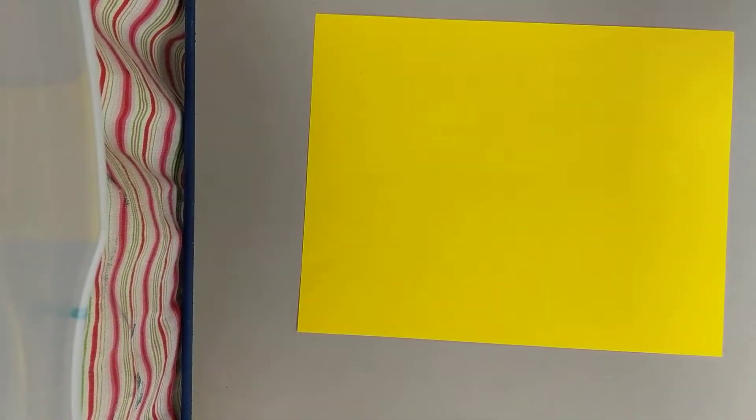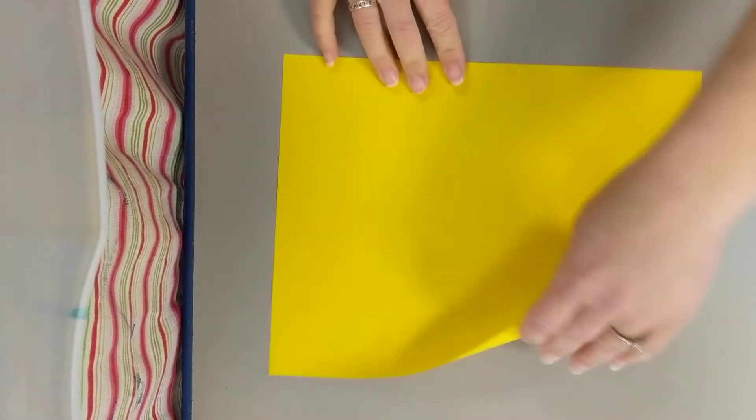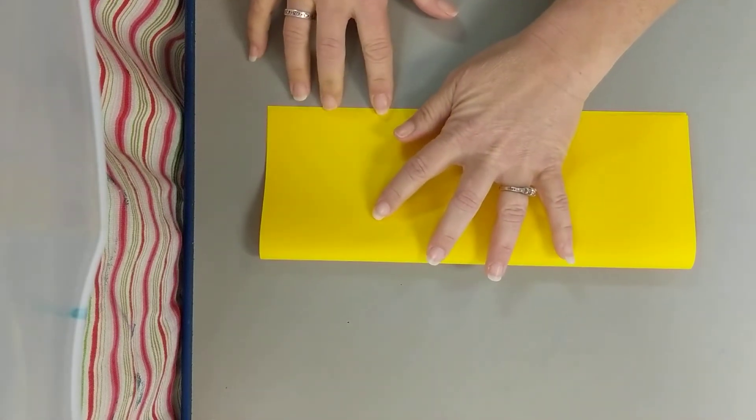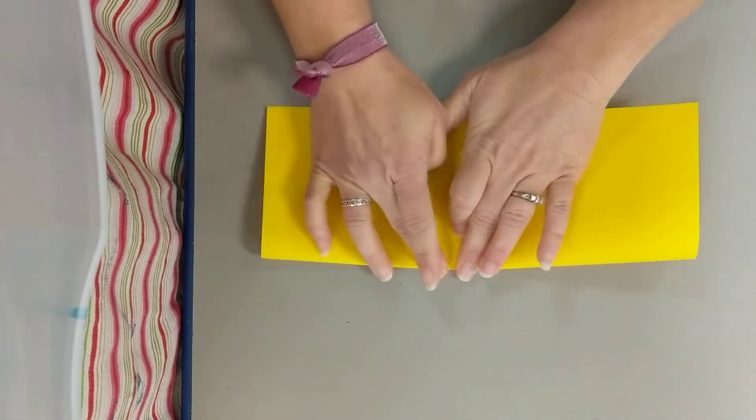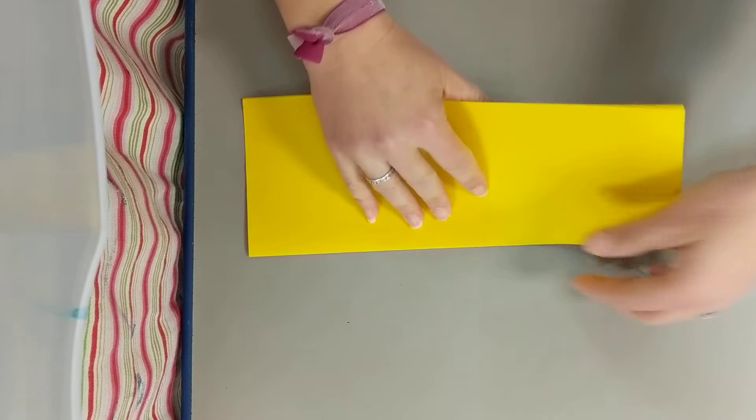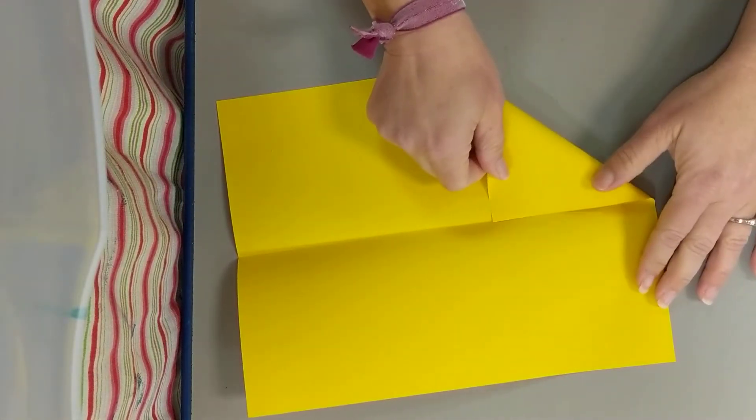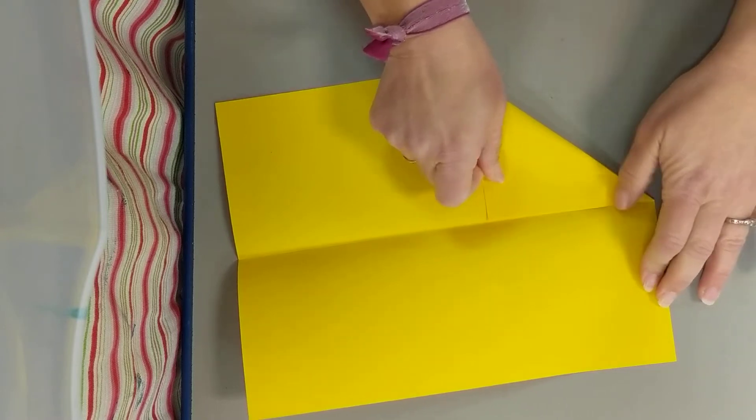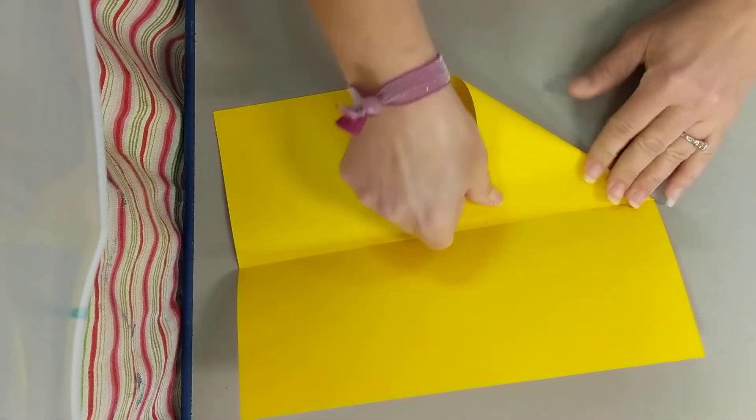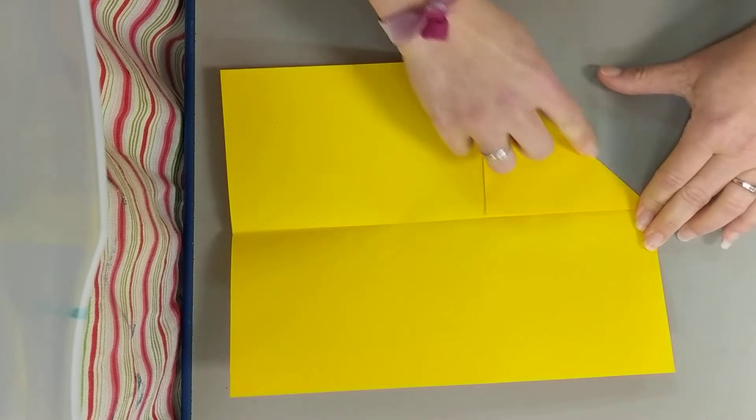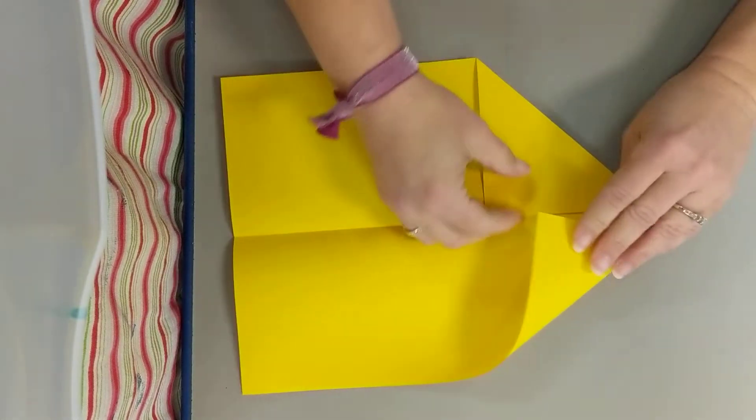Then you open it back up and fold one corner right into the middle. Press down real hard, use your fingernail, and do the other side. Make a nice sharp point - this is going to be the front of your airplane.